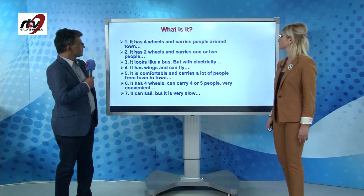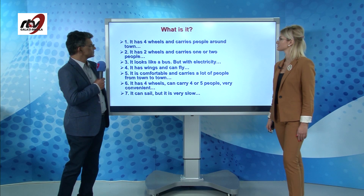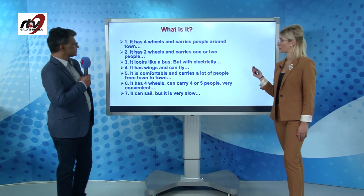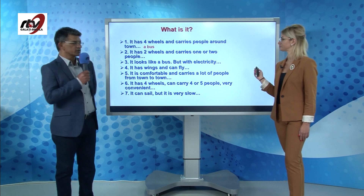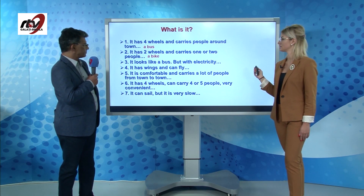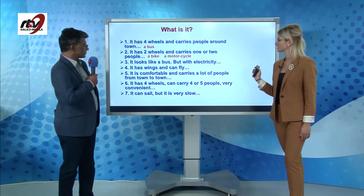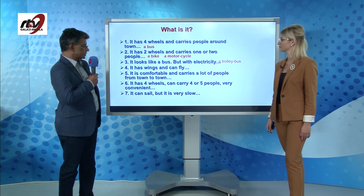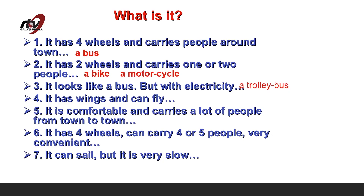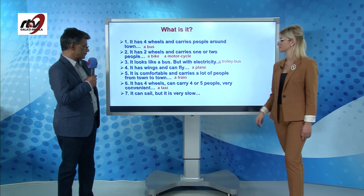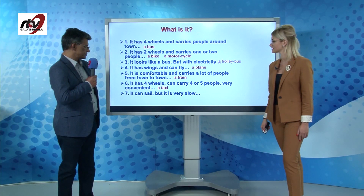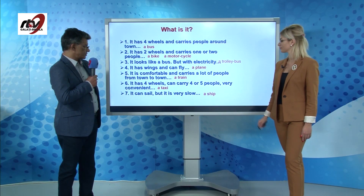For the next activity, guess the correct word. It has four wheels and carries people around town — a bus. It has two wheels and carries one or two people — a bike or motorcycle. It looks like a bus but runs on electricity — a trolleybus. It has wings and can fly — a plane. It is comfortable and carries a lot of people from town to town — a train. It has four wheels, can carry four or five people, and is very convenient — a taxi. And it can sail but is very slow — a ship.